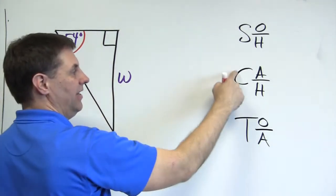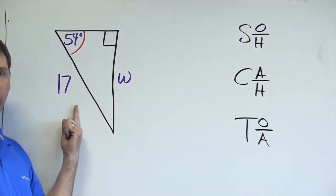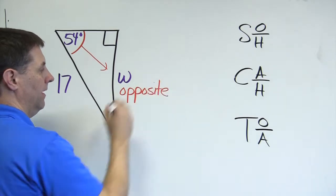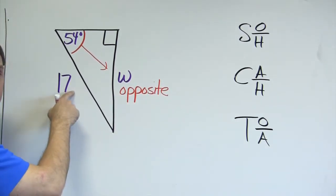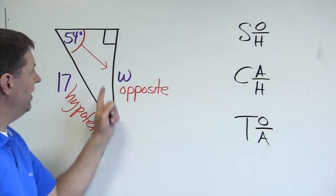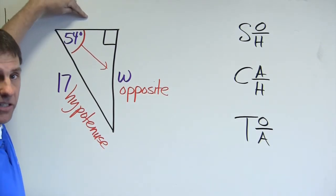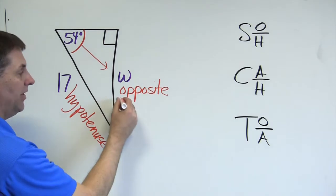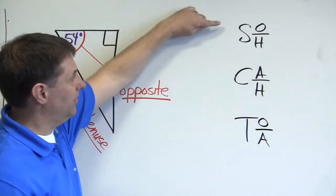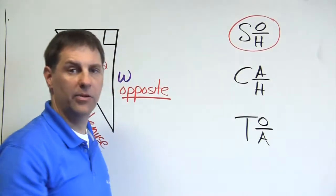To figure out whether to use sine, cosine, or tangent, label the sides. Side w is the opposite side, and 17 is the hypotenuse. They don't give or ask for the adjacent side, so I'll use the trig ratio with opposite and hypotenuse. Looking at my list, the ratio that uses opposite and hypotenuse is sine.